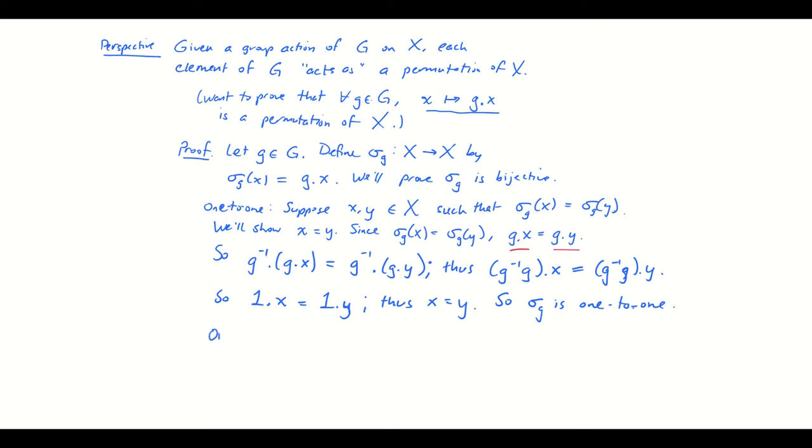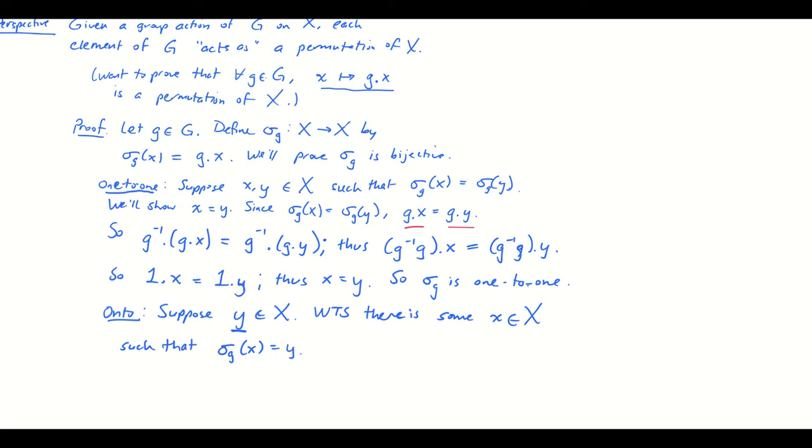What about showing that sigma_g is onto? Well, let's suppose that y belongs to X. Then we want to show there is some element x belonging to X such that sigma_g(x) is equal to y. In other words, we want to show that we can arrive at y by acting on some element of X with g. And as always with this kind of proof, I want to come over here and do a little work in the margin.